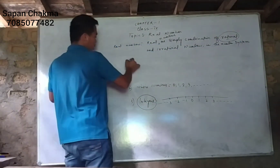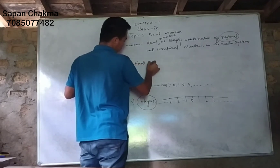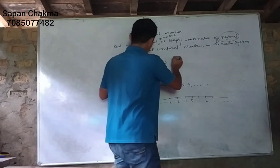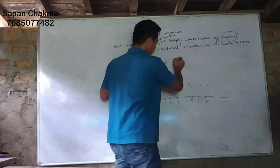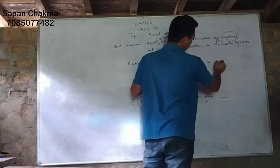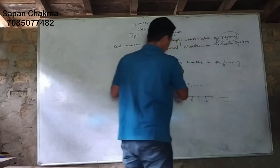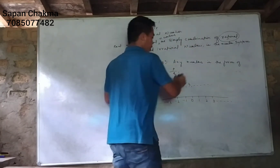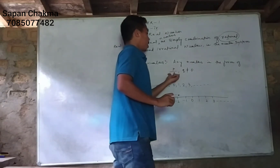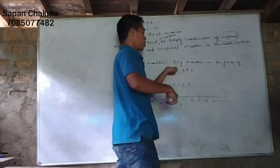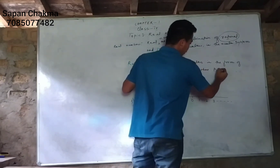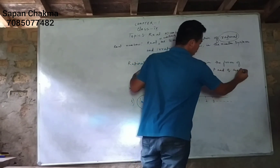The numbers that are more than 0 in value — a rational number is of the form p over q, where q cannot be equal to 0.